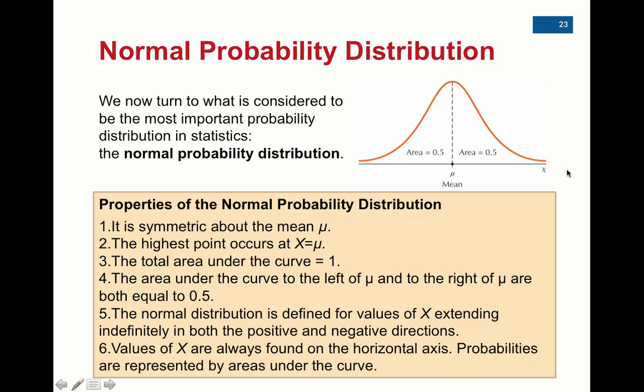And then the x-values are always on the horizontal axis and probabilities are always going to be represented inside the curve. That's going to be a good distinction to make because, remember, the number line follows properties from small to big. Area follows the rules of being between 0 and 1 and the total area equaling 1.